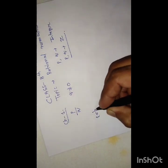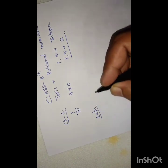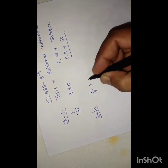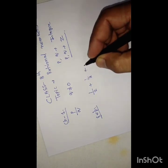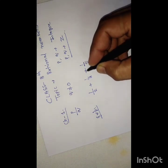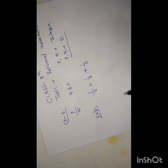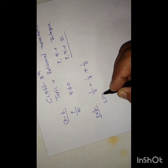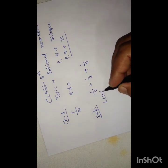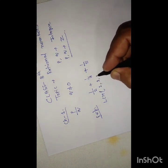For example, we have 1 upon 2 plus 1 upon 3 plus 1 upon 5 — three numbers we have to add. Just as we learned in earlier classes, when we add rational numbers we need to find the LCM of the denominators: 2, 3, and 5.